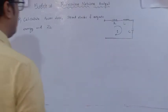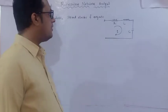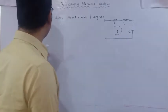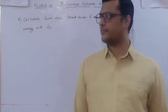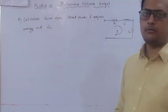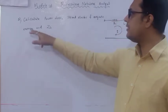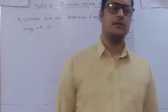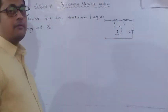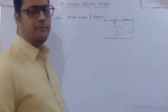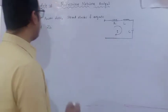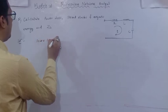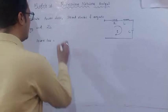Here is one more question: a simple RLC series circuit with current I flowing through the network. We have to calculate: first, power loss; second, energy stored due to electric field and magnetic field; and third, the input impedance. When the term 'power loss' comes, it means power dissipation, which takes place at the resistive element.